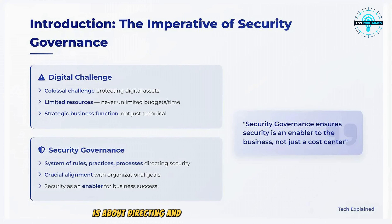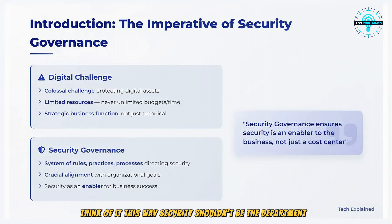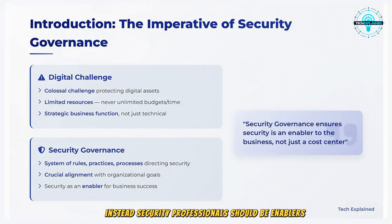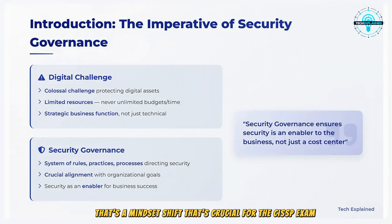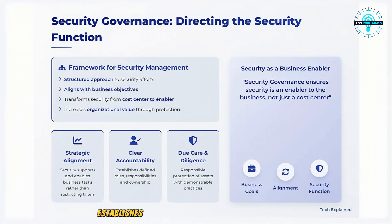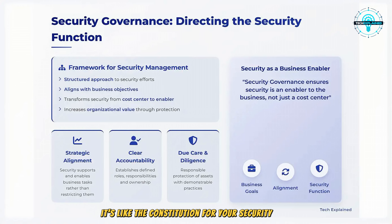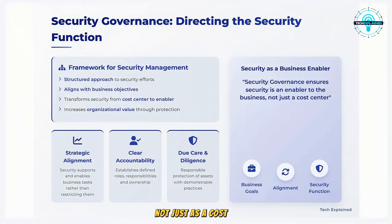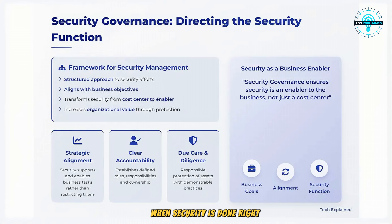Security governance is about directing and controlling the security function to help the business achieve its goals. Security shouldn't be the department of no, constantly telling the business what they can't do. Instead, security professionals should be enablers, helping the business take calculated risks safely. Security governance establishes the framework for how an organization's security efforts are managed — like the constitution for your security program. The key point is that security should be seen not just as a cost center, but as an enabler that increases the value of the organization. For example, strong bank security enables customers to trust the bank with their money, which is fundamental to its business model.